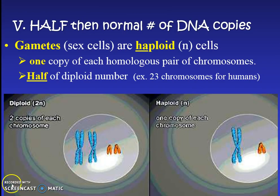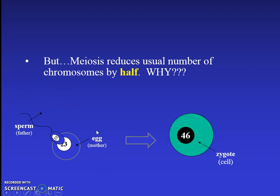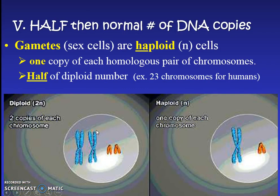All right, we made it to the end. Next time we'll learn the details of meiosis. Just remember: meiosis produces cells with half the normal amount of chromosomes — 23 — which we now call haploid. Great job, everyone.